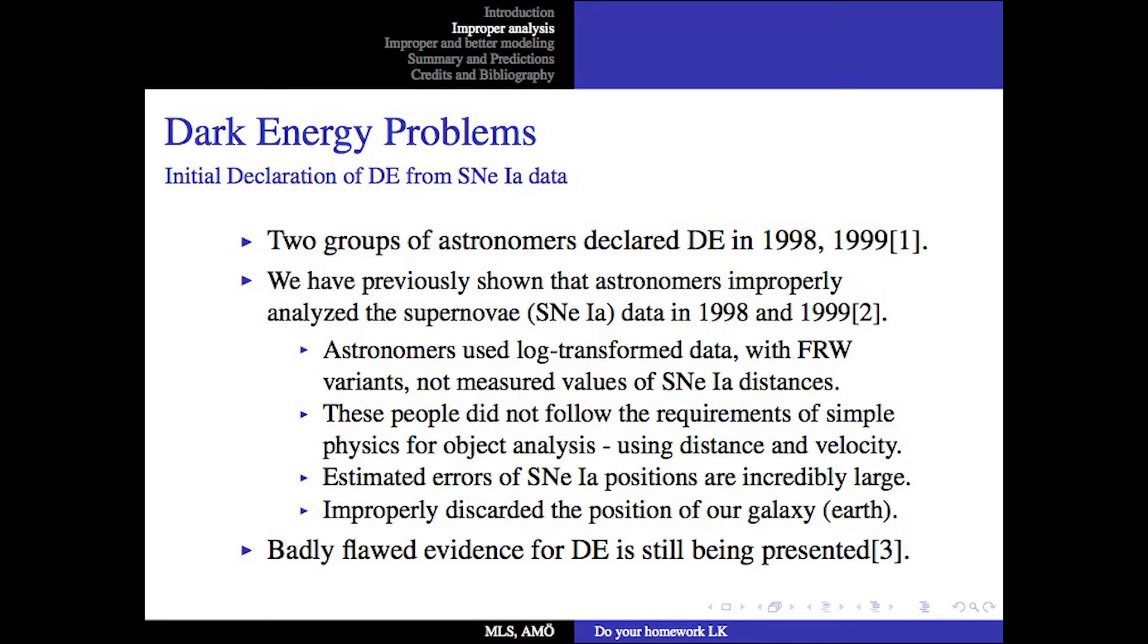Continuing on our dark energy problems. Two groups of astronomers declared dark energy in 1998 and 1999. We have previously shown that astronomers improperly analyzed the supernova data in a previous YouTube presentation. Astronomers used log transformed data with the Friedman-Robertson-Walker variant, not measured values of the supernova distances. These people did not follow the requirements of simple physics for object analysis. They did not use distance and velocity. The estimated errors of the supernova positions are incredibly large, not small as shown on the log transformed plots. They improperly discarded the position of our galaxy Earth. This badly flawed evidence for dark energy is still being presented today.